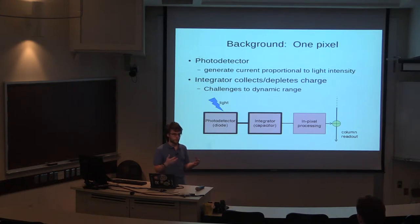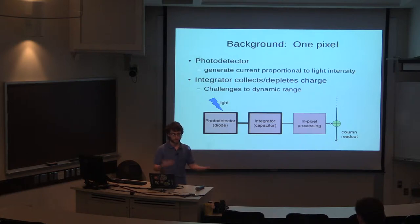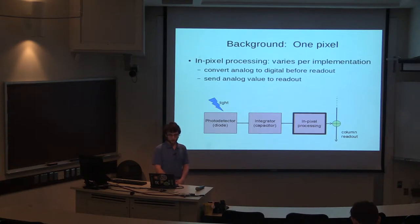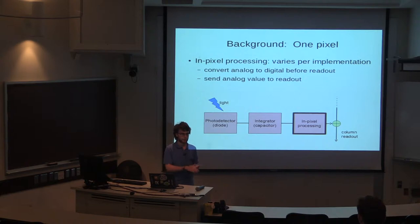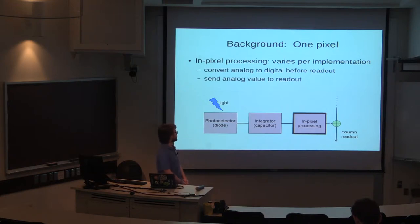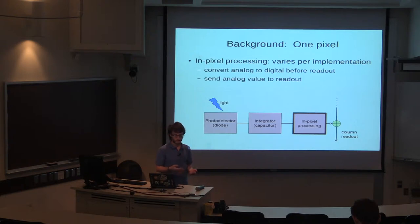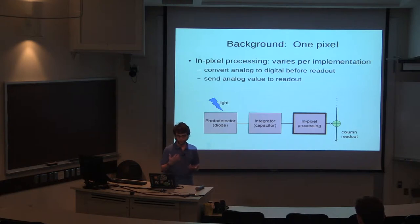Smaller buckets give you more information in the dark areas, but you'll see the washing out in bright areas. Larger buckets cause you to lose a lot of information in dark areas. The in-pixel processing usually goes one of two ways: either converting the analog signal into a digital signal and pushing it down the pipeline, or sending all analog signals. Cheaper cameras use the analog approach, because there's less circuitry, but you lose a lot of information from noise and electrical interference like crosstalk.